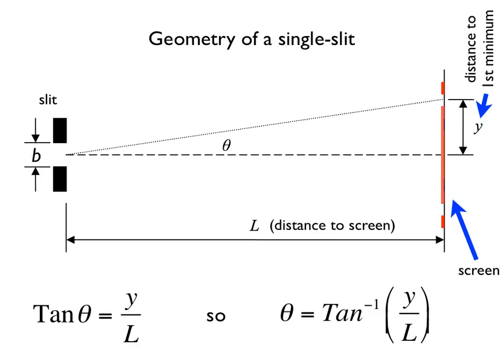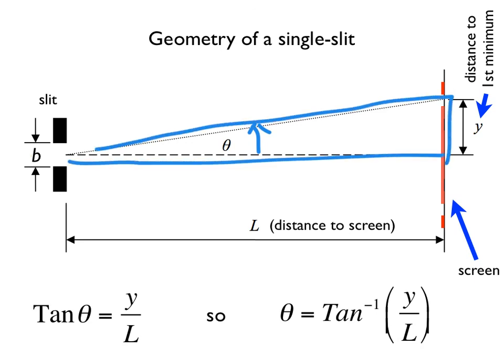Going back to this diagram again, once we know the value of theta that we could get from the formula on the previous two slides, then we can come back to this right triangle, and you should be able to see that we can use the tangent function to figure out what L or Y is, depending on which of these things is being given.